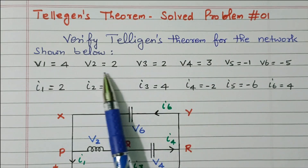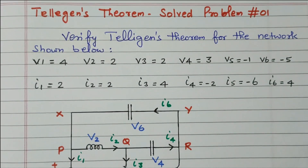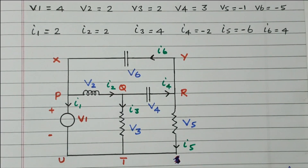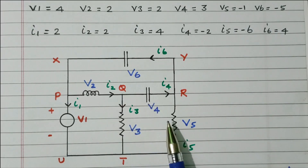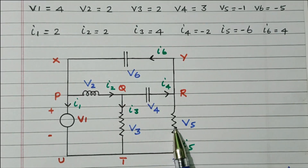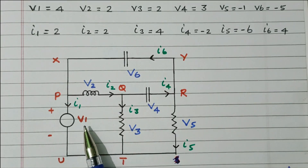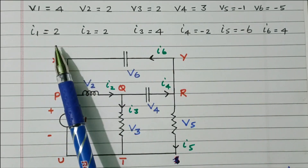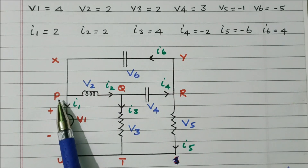We need to verify the Telegen's Theorem for the network shown in the problem. Looking at the network, one voltage source is available, along with one inductor, a resistor, a capacitor, and another resistor. All the voltage and current details — V1 to V6 and I1 to I6 — are given, and the node naming is provided.